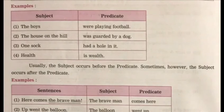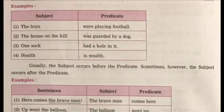Whenever you want to find the subject from a sentence, you will ask the question 'who'. For example: 'The boys were playing football.' Who were playing football? The boys. So 'the boys' is the subject and the rest of the sentence is your predicate. 'The house on the hill was guarded by a dog.'